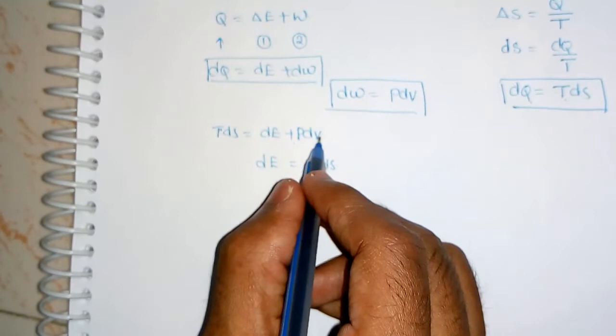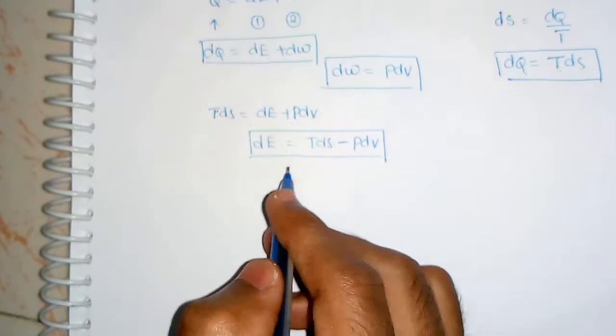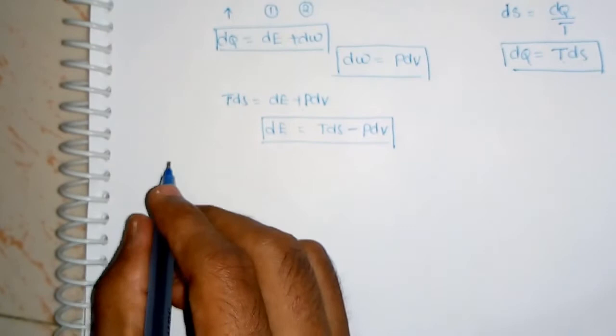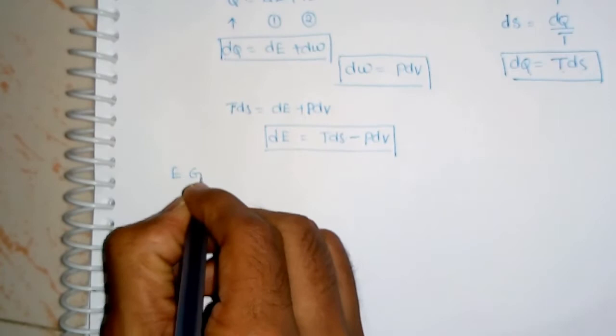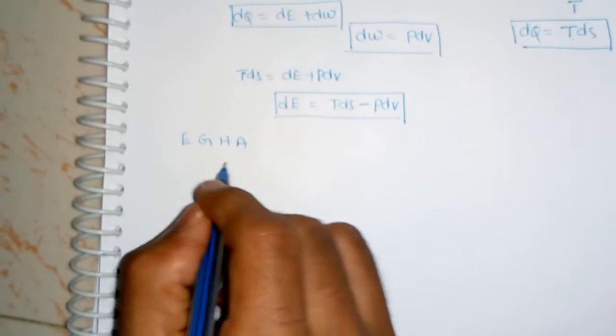Rearranging, the PDV term moves to the other side to become minus PDV, giving us DE = TDS − PDV. This is the first Gibbs relation for internal energy. By using this relation only, we can get the other Gibbs equations, so this relation is very important. The shortcut trick to remember is the word 'EGA' — EGA.